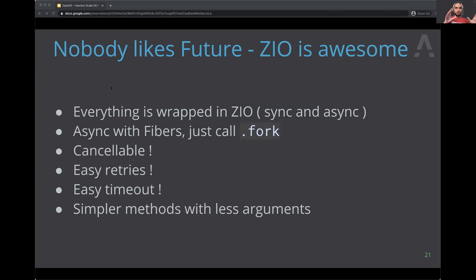The ZIO type has an environment with requirements to perform these tasks, the errors, and the output in case of success. The advantage of ZIO over futures when wrapping Spark is that you can wrap both what you want to parallelize and what you don't. You have one framework, you don't have to jump in and out of the future framework. When you decide to start something asynchronously you just call dot-fork. You can cancel, retry with dot-retry, set timeouts, and push your database or Spark session into the environment so you don't have to pass it everywhere.